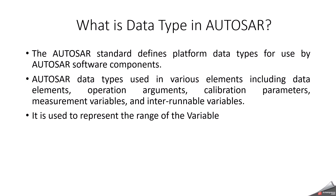Now we can start to understand what is a data type and how we can define it in Autosar. Basically, the data type is used to represent the range of a variable. For example, in C language or other languages, whenever you want to declare a variable to send one byte, you define it as unsigned 8. In Autosar, we need a data type for creating data elements, operation arguments, calibration parameters, measurement variables, or inter-runnable variables — because when you want to send data from one software component to another, you need a data type to represent the variable.